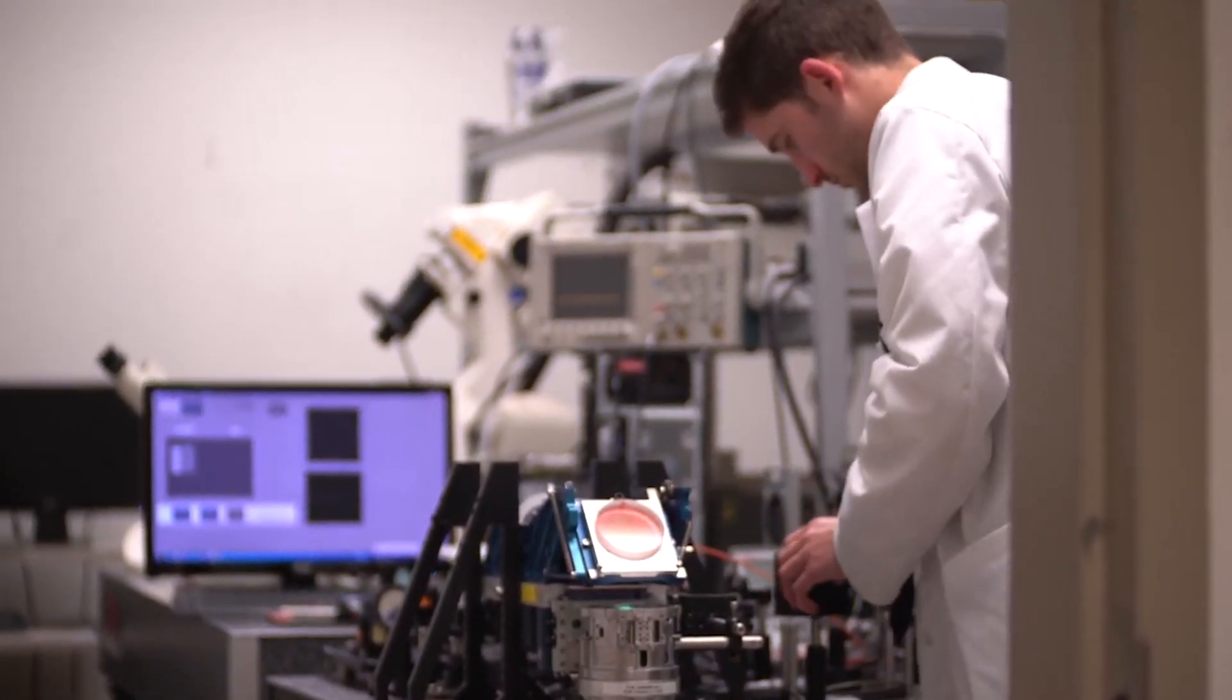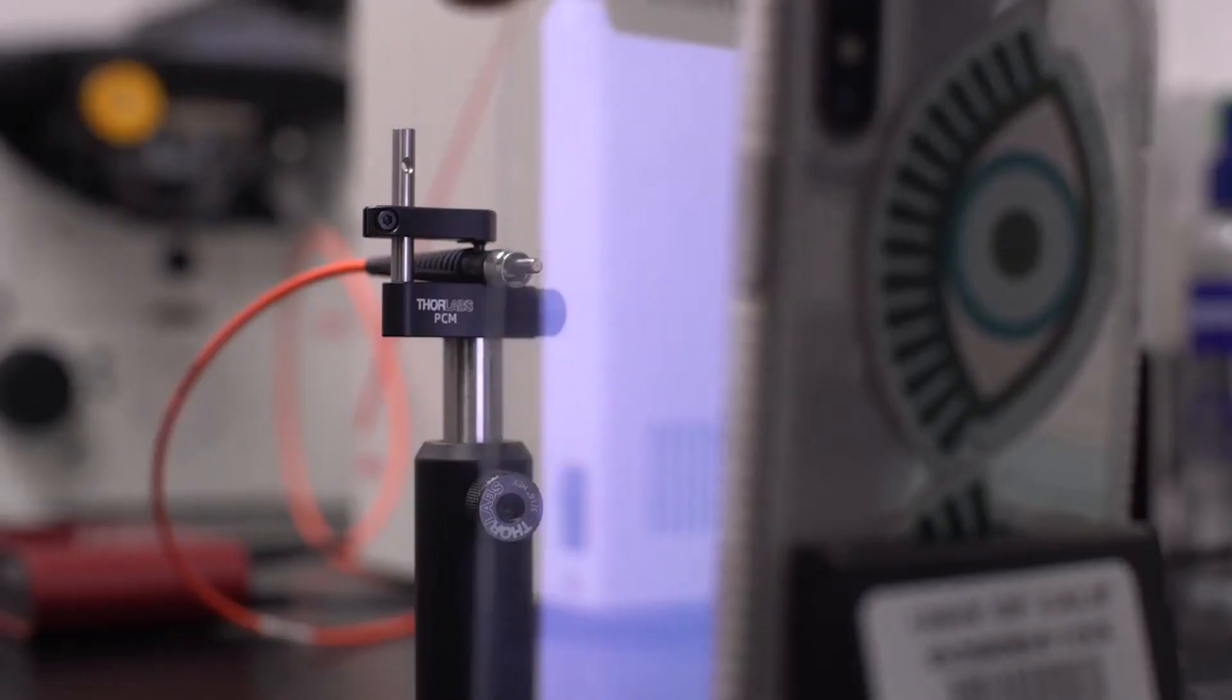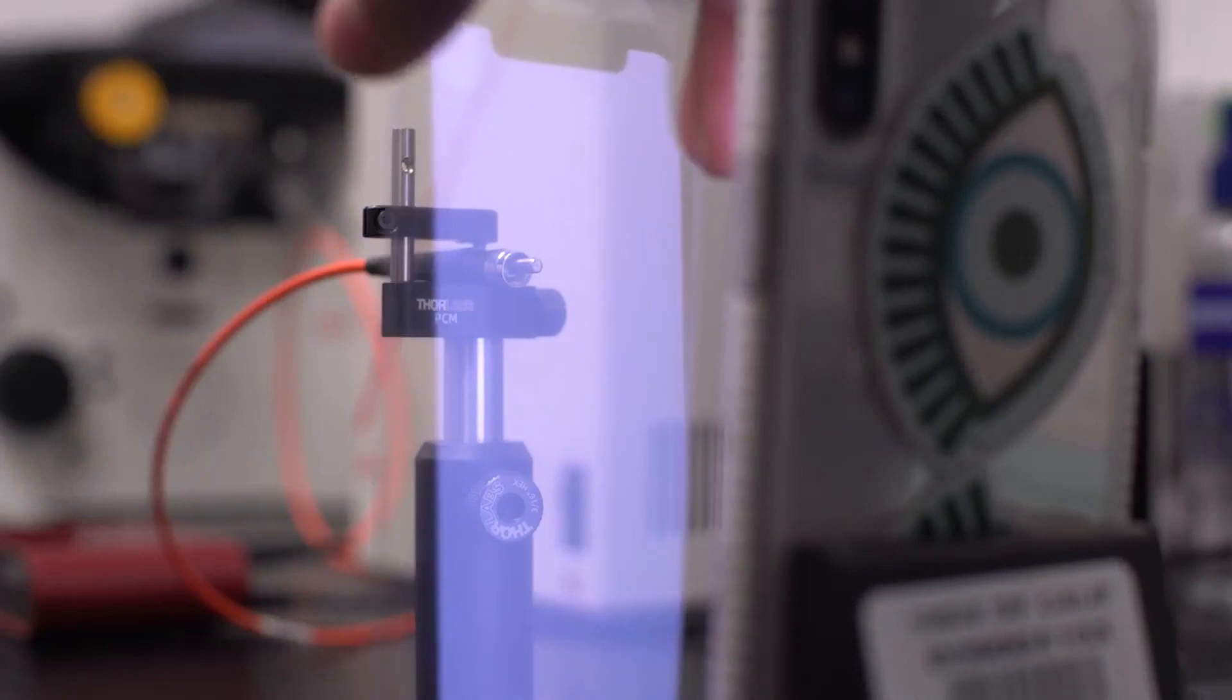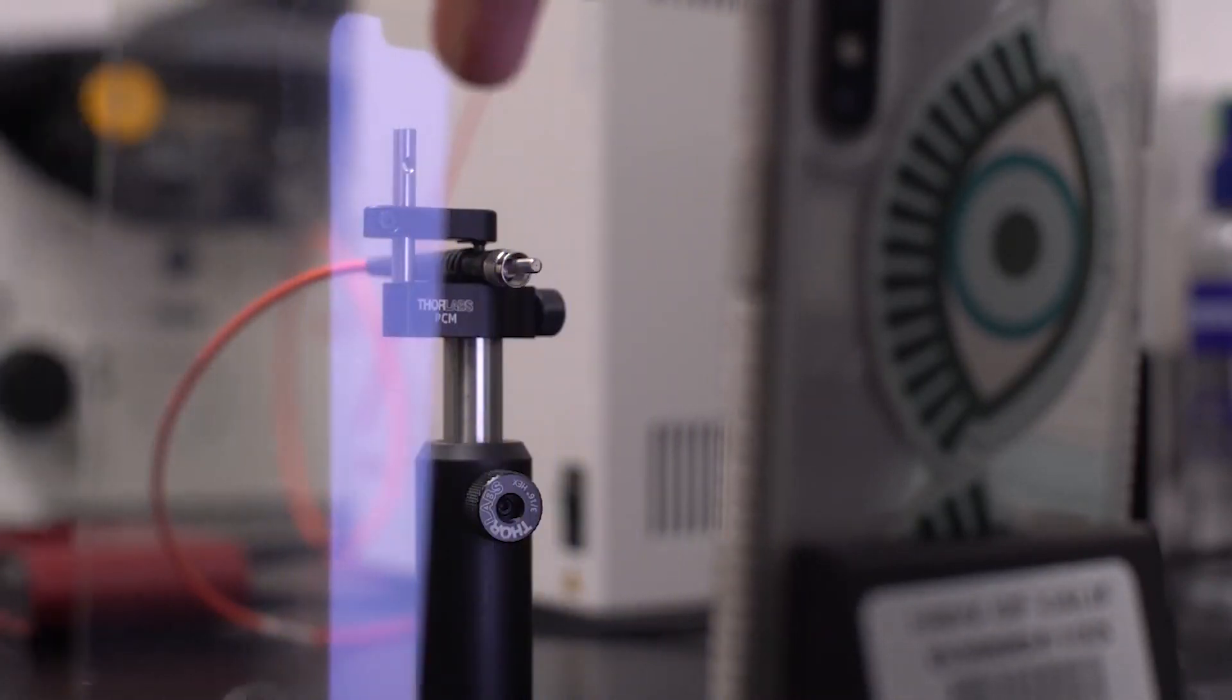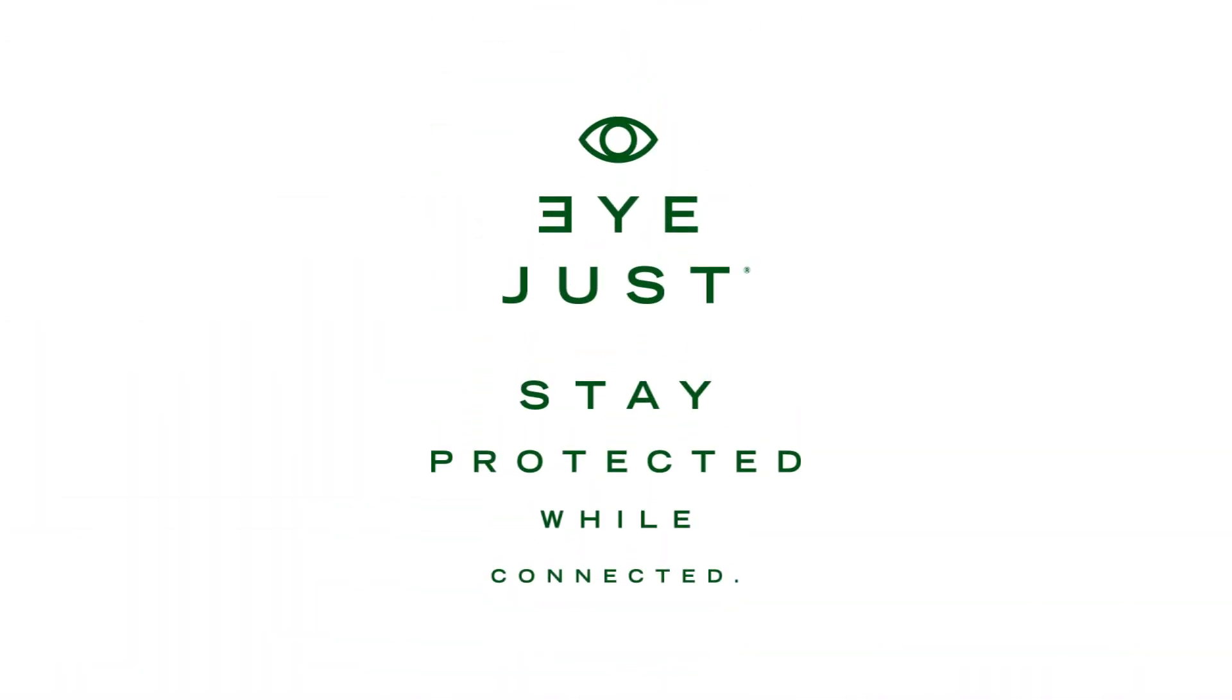What we've shown in this model here is that we can block a certain amount of blue light, which seems to not affect the way the screen looks to the average user, but at the same time is decreasing the negative effects of the blue light in the eye. iJust helps you stay protected while connected.